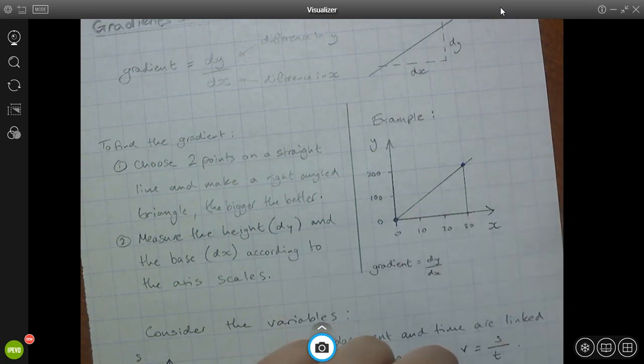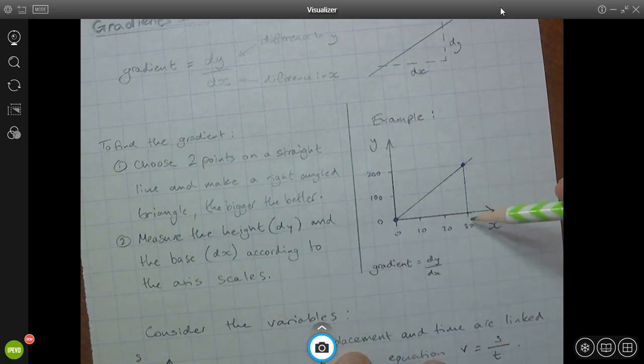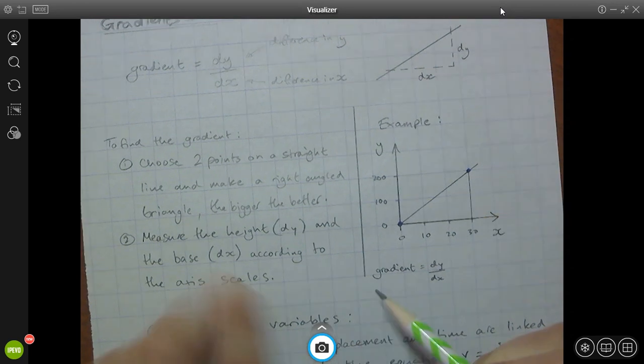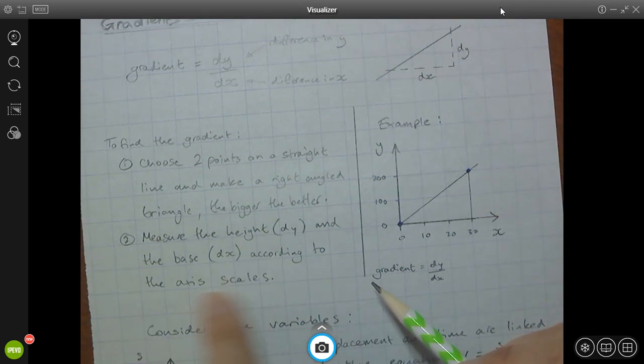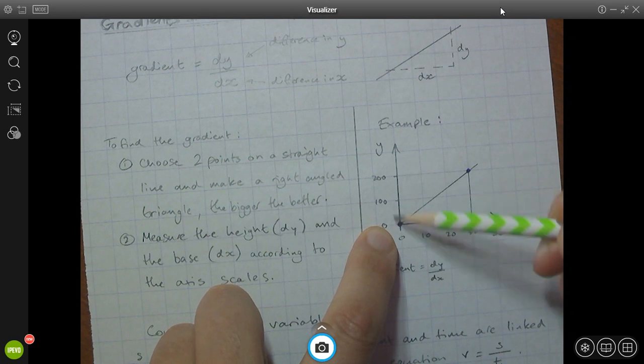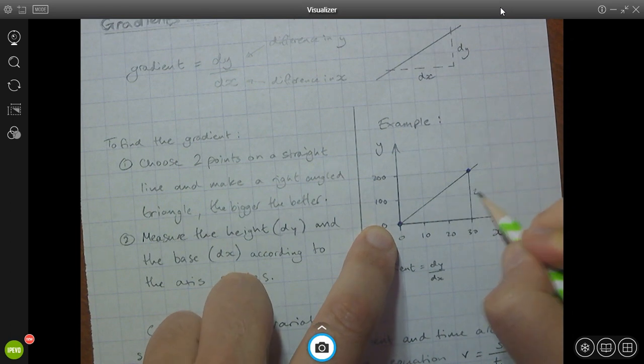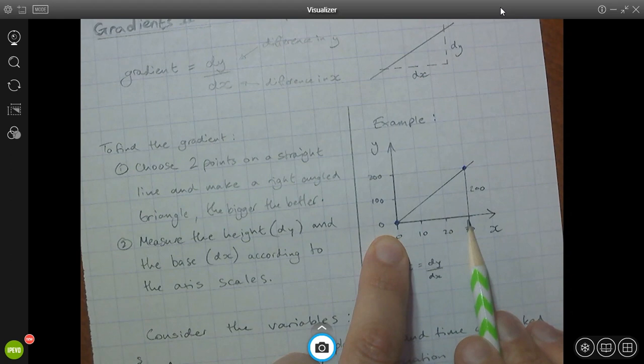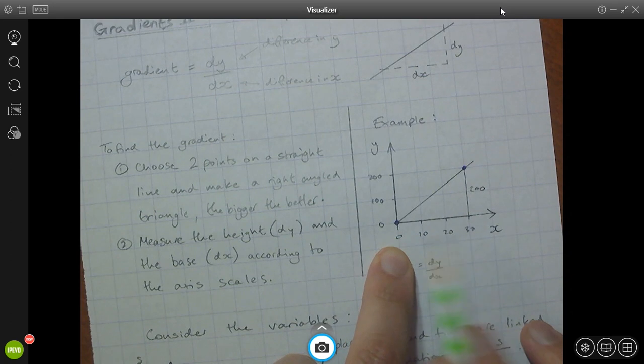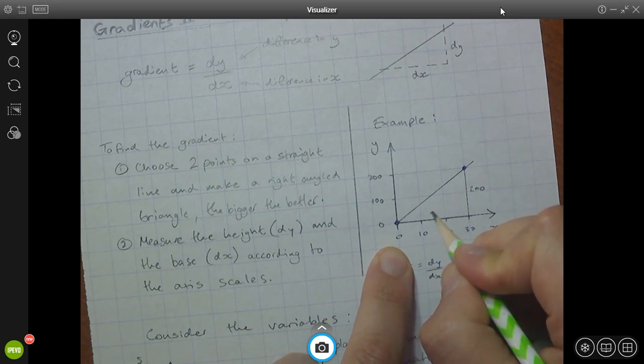Now the height of the triangle is my dy. So I'm going to measure the height using the axis scale, not using my ruler, but using this scale. So the height of this triangle is 200 units, whatever those units are. And the base, the dx, is 30 units from the x-axis. This is 30 long.